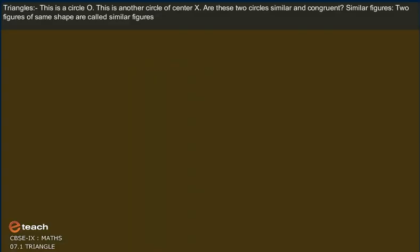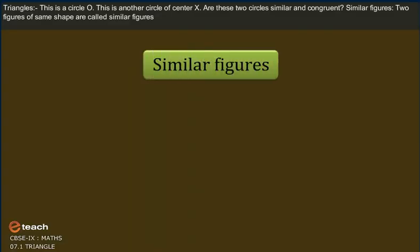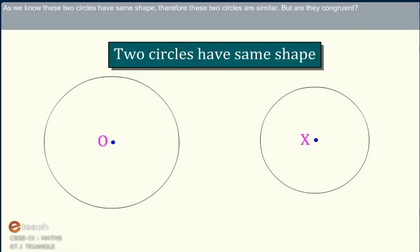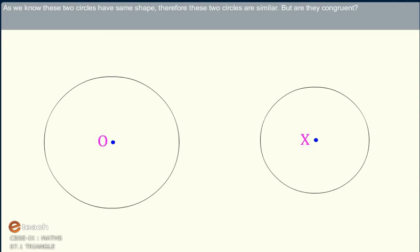Two figures of the same shape are called similar figures. As we know, these two circles have the same shape. Therefore, these two circles are similar.